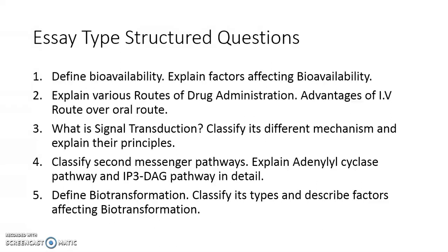Question number four is: classify second messenger pathways and explain the adenylyl cyclase pathway and the IP3-DAG pathway in detail. Question numbers three and four are pretty much alike — the difference being that in question four the adenylyl cyclase and IP3-DAG pathways are specifically defined, whereas in question three all four second messenger pathway signal transduction systems must be explained along with their subclasses. Question number five is: define biotransformation, classify its types, and describe the factors affecting biotransformation — including synthetic and non-synthetic, or phase one and phase two, with subtypes and examples.